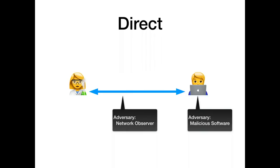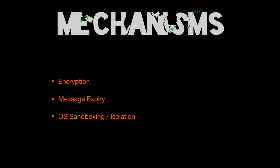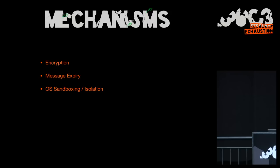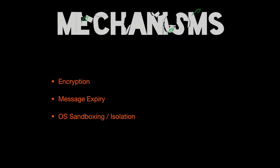One of those adversaries would be the network — can someone else see this communication and how do we hide from that? We have mechanisms against that, namely encryption. I can encrypt my communication so that someone who is not my intended recipient cannot see what's happening. Then there are the end devices themselves. There might be bad software that later gets installed and tries to steal or learn about what was said — either at the same time or afterwards. Mechanisms there include message expiry, making messages go away and deleting them from disk, and making sure we've isolated our chat so that other applications can't see what's happening.